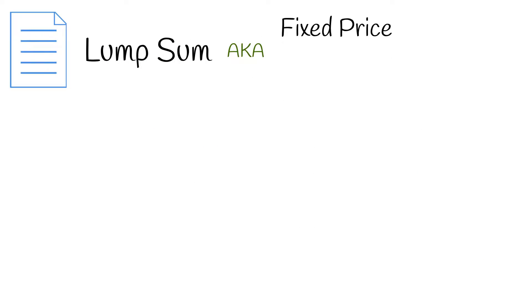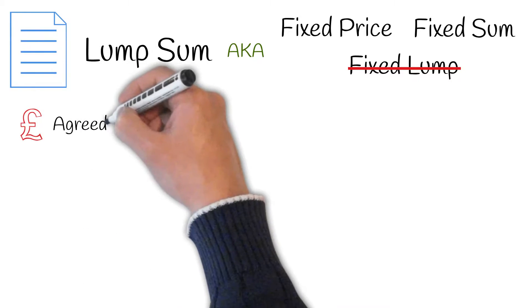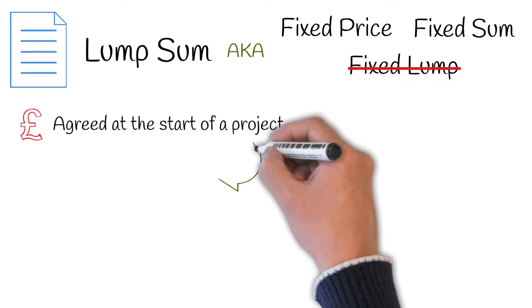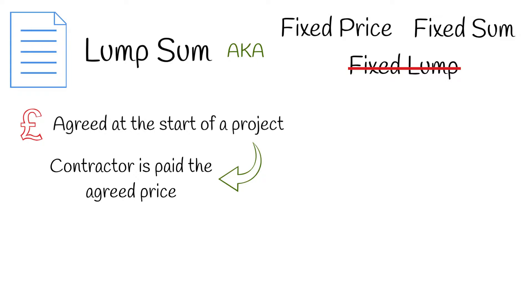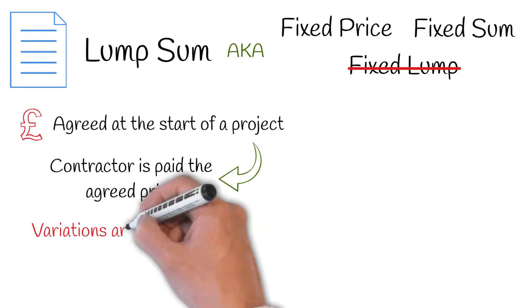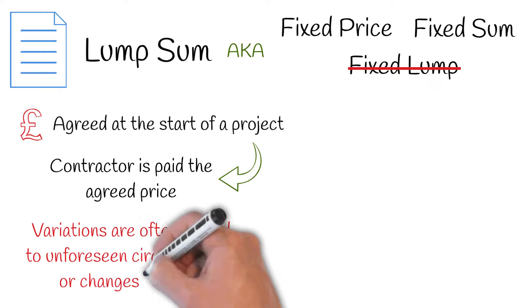We'll start with perhaps the most common contract type: lump sum, otherwise known as fixed price or fixed sum. There are lots of different terms people use, however the general concept remains the same. A price is agreed at the start of the project, and the contractor is paid the agreed price. Lump sum doesn't mean the price is unchangeable; however, variations are often limited to unforeseen circumstances or changes in scope.